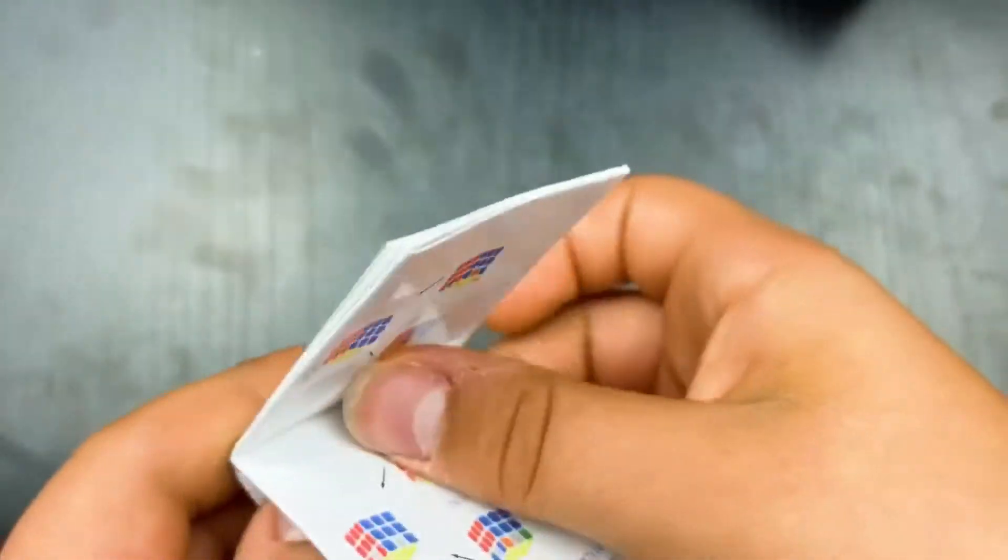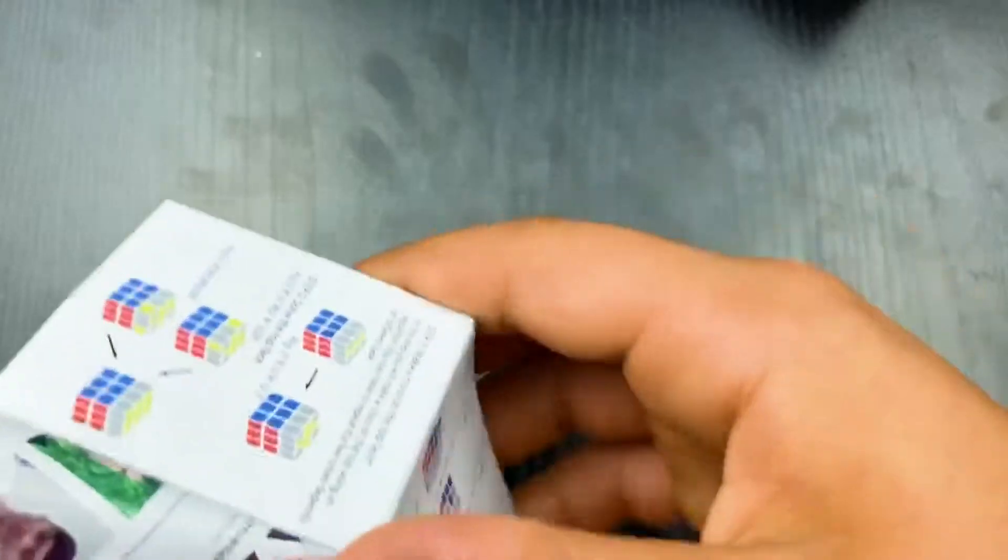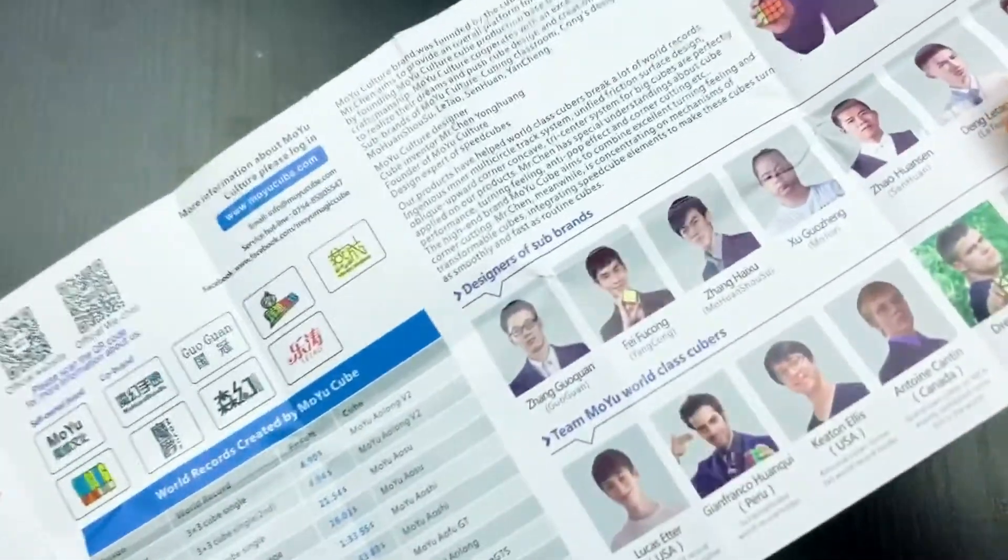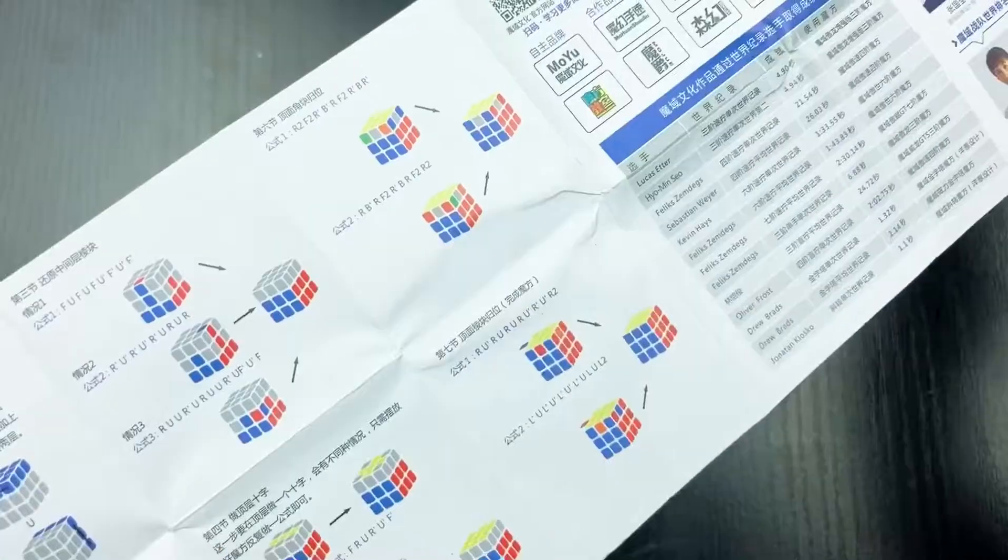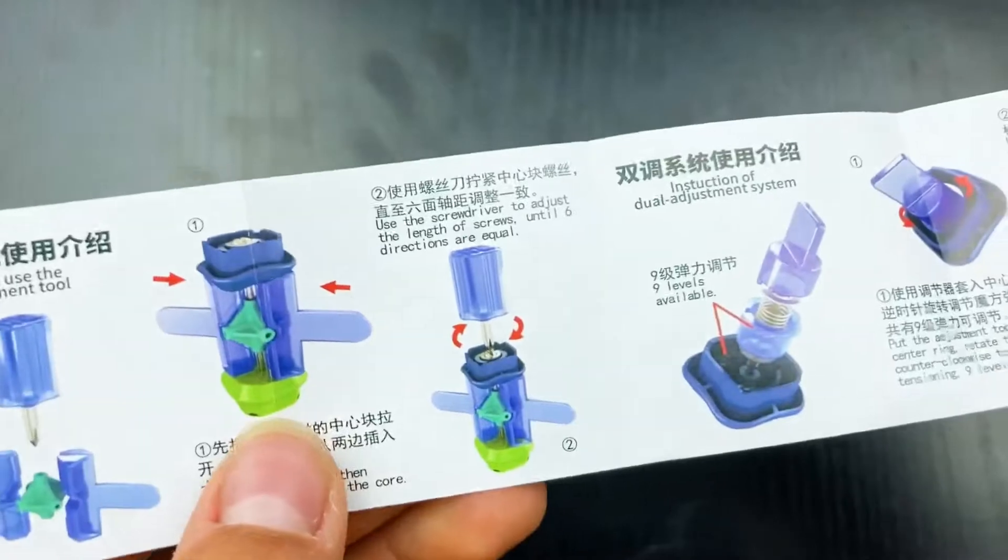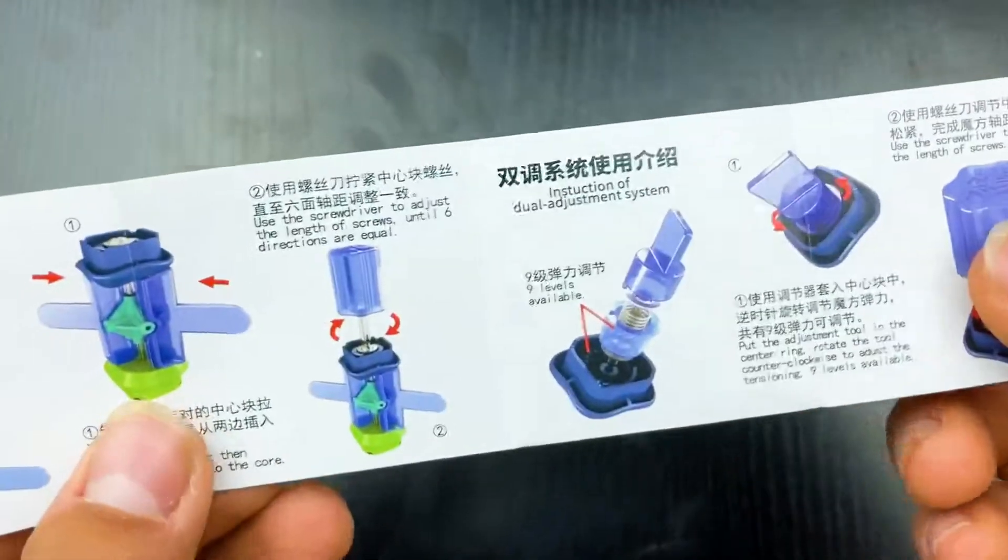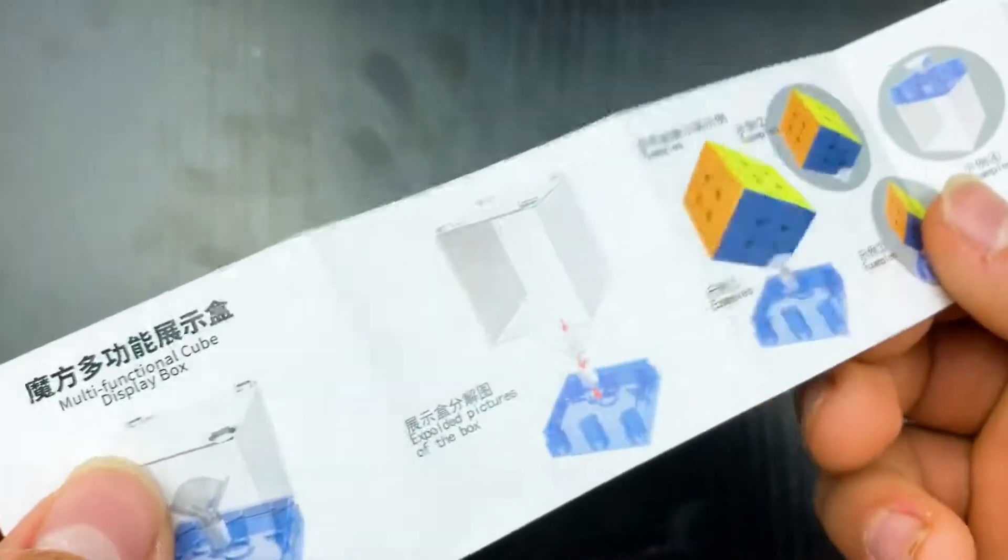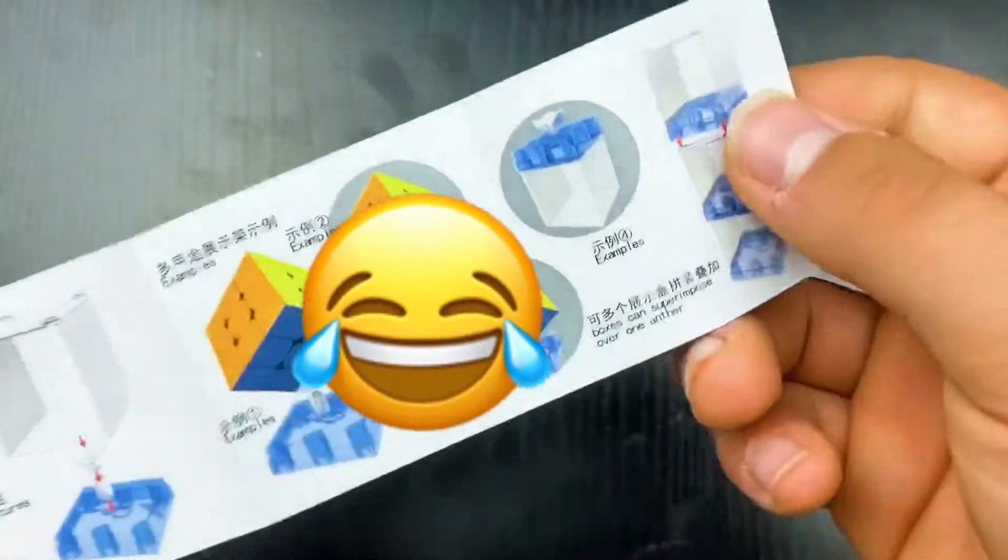And we have another pamphlet which just appears to be a 3x3 solving guide. We also get some Moyu sponsors. On the back side, it's basically just the same thing in Chinese. If you don't know how to use the Moyu tension adjustment, definitely use this. I already know how to use it so I'm not going to be paying attention to this. And I just realized that both sides have Chinese and English which is good.